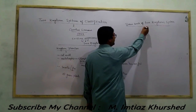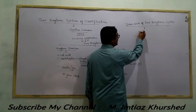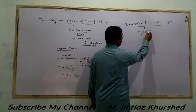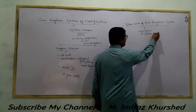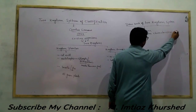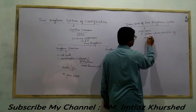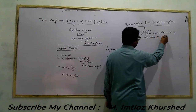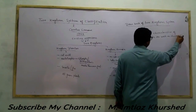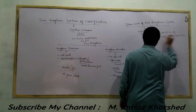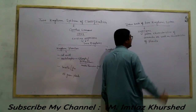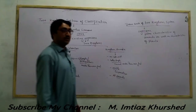The drawback is the discovery of organisms like Euglena. Euglena is an organism which possesses characteristics of both animals as well as characteristics of plants. It has both plant and animal characteristics.